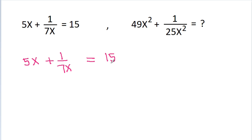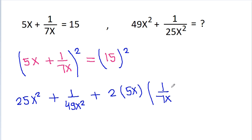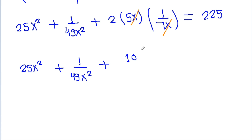If we square both sides, then 5x square will be 25x square, plus 1 by 7x square will be 1 by 49x square, plus 2 times 5x into 1 by 7x is equal to 15 square, which is 225. Now we get 25x square plus 1 by 49x square, and here x and x will get cancelled, and 2 into 5 will be 10 by 7, is equal to 225.